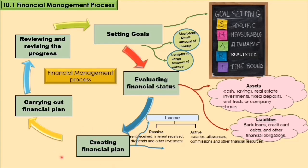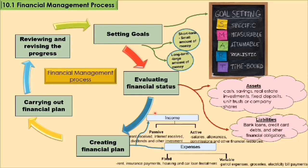After evaluating financial status, we learn to create a financial plan. There are two important components in constructing a financial plan: sources of income and expenses. Income consists of active income and passive income. Active income is main income such as salaries, allowance, commissions, and other financial resources. Passive income consists of grants received, interest received, dividends, and other investments.